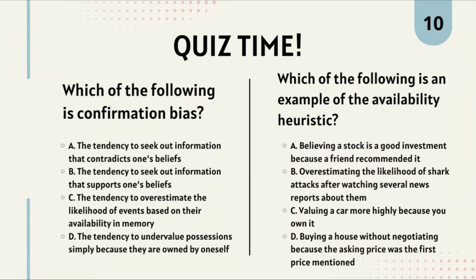Question 2: Which of the following is an example of the availability heuristic? Option A: believing a stock is a good investment because a friend recommended it. Option B: overestimating the likelihood of shark attacks after watching several news reports about them. Option C: valuing a car more highly because you own it. Option D: buying a house without negotiating because the asking price was the first price mentioned. The correct answer is Option B.